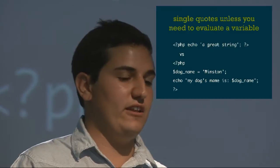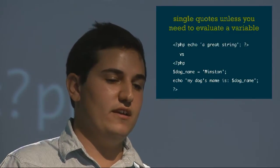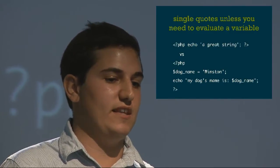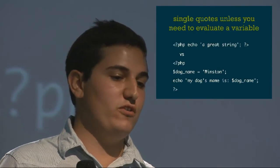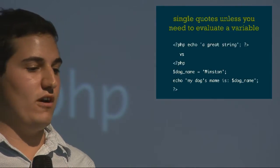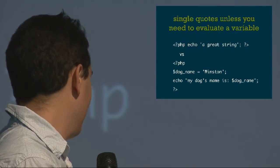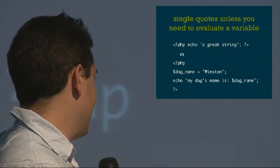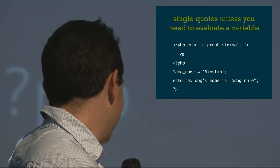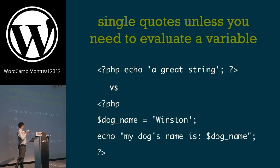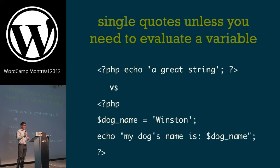Use single quotes unless you need to evaluate a variable. If you're writing a string, there's no reason to use double quotes unless there's a variable in the middle or you need to escape a single quote. For example, with 'my dog's name is dog_name', if you use single quotes it would break because you have both a single quote and a variable. In that case you do want double quotes — but unless you absolutely need to, the standard is to use single quotes.